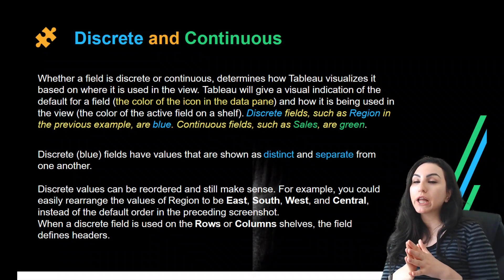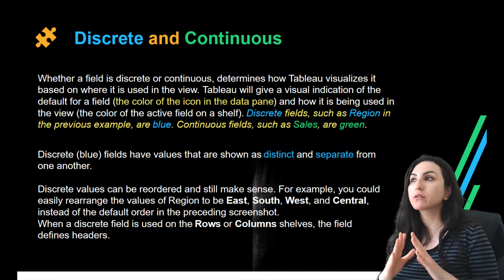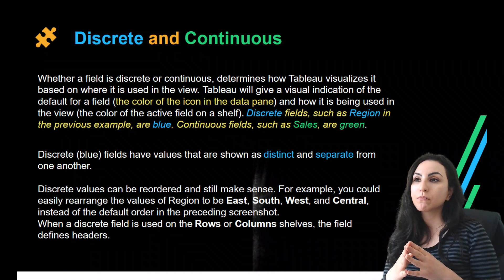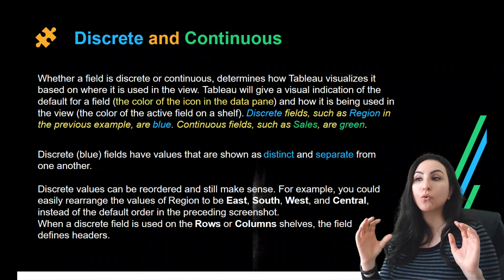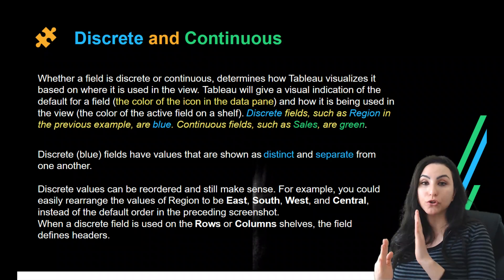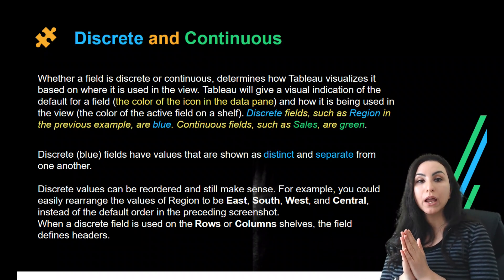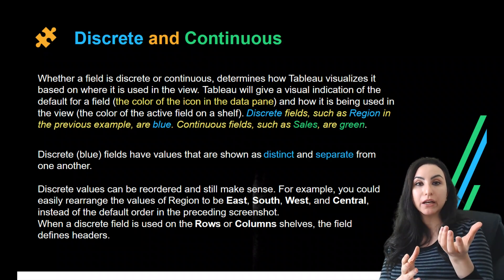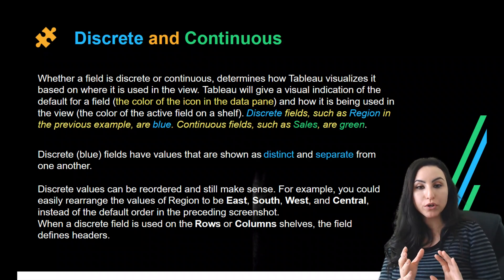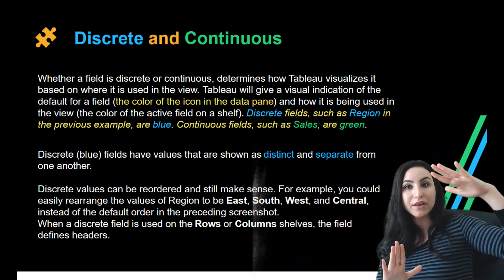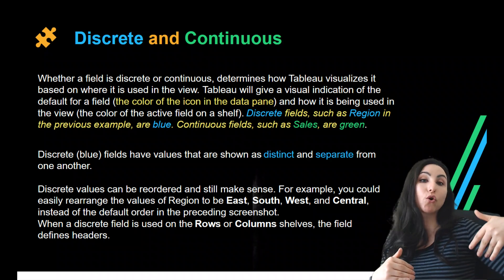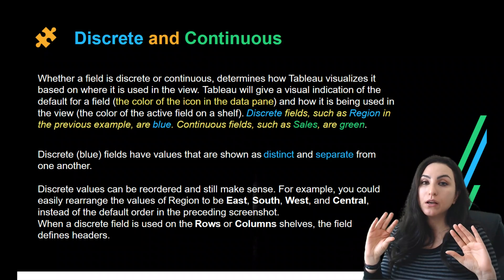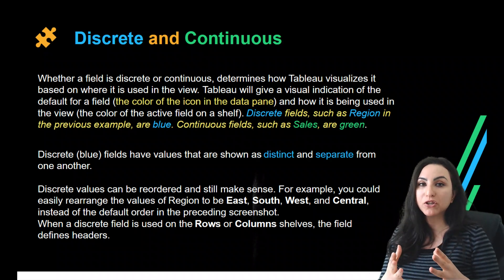However, when we're talking about date, we could have it as either discrete or continuous. For example, if we show quarters over three years as a discrete field, the date dimension slices the data into quarter one, two, three, four, and the sales or profits are aggregated — summed over quarter one for all three years, quarter two for all three years, and so on.